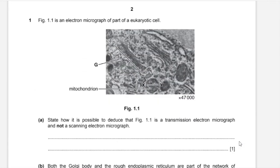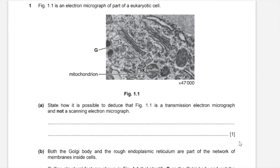Question 1. Figure 1.1 is an electron micrograph of a part of a eukaryotic cell. Part A: State how it is possible to deduce that figure 1.1 is a transmission electron micrograph and not a scanning electron micrograph.